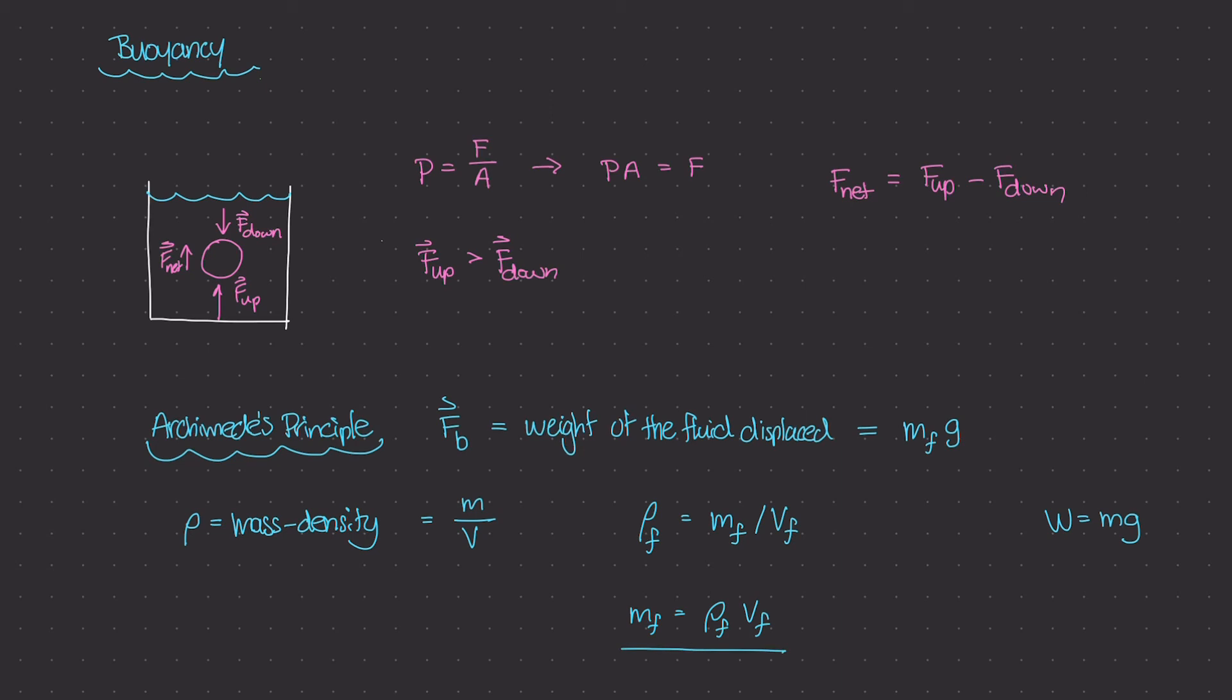So this is the mass of the actual water that got displaced. So the weight of that water that got displaced, so W of the fluid, is going to be mass times gravity. And our mass is right here. So that mass is going to be rho sub f times the volume times the gravitational constant.